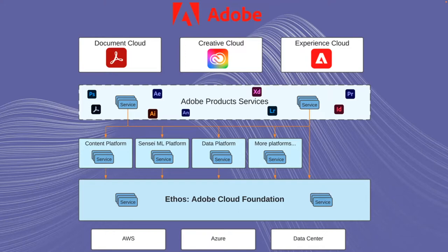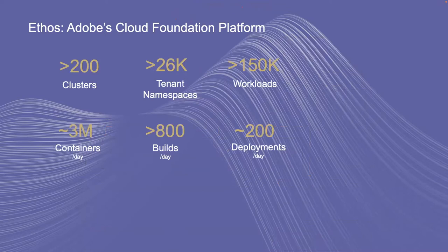Just to give you the scale for Ethos specifically: we currently have more than 200 clusters, the majority of which are multi-tenant. There are around 26 namespaces running around 150k workloads at any point in time. On average, there are around 3 million containers running per day, around 800 builds per day, and around 200 deployments happening using our CI-CD tools.